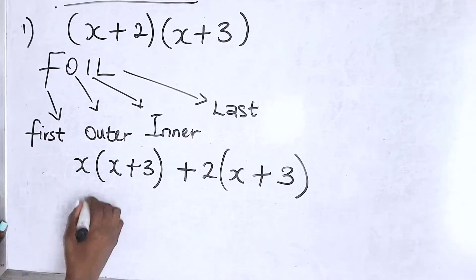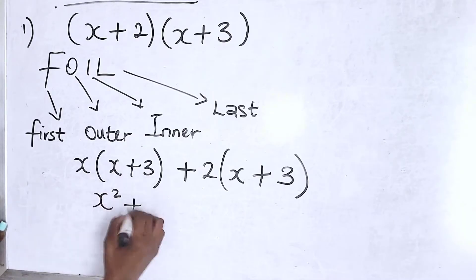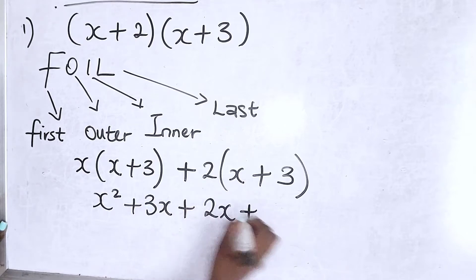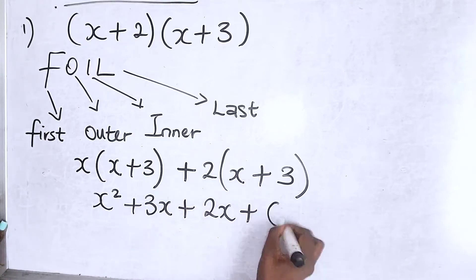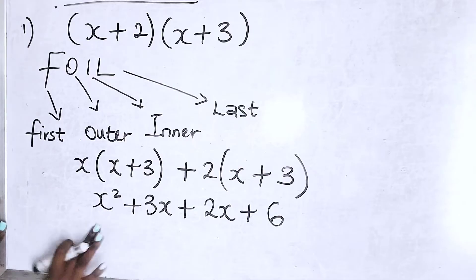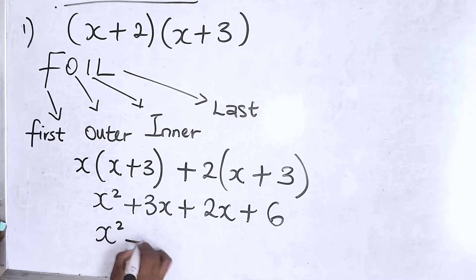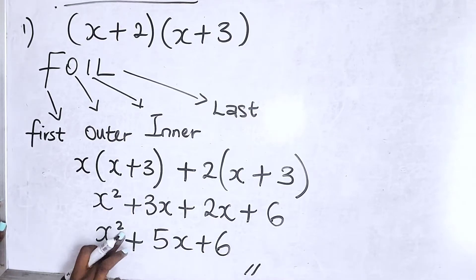So now you have X times X to be X squared. You have X times 3 to be 3X. You have 2 times X to be 2X, and then you have 2 times 3 to be 6. Of course, you know this is an algebraic expression because there is no equal sign, so it's not an equation. So we can add these two terms that look alike. So you have X squared plus 3 plus 2 is what? 5X plus 6. This is where you stop because you cannot add square to X. X squared and X are two different things.